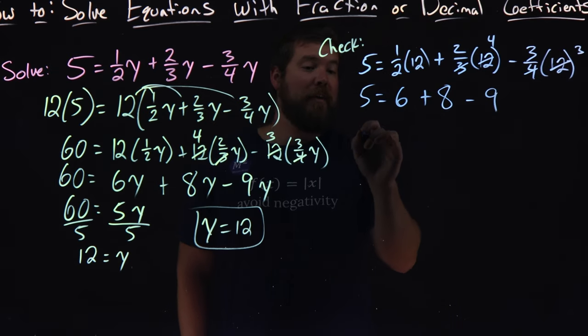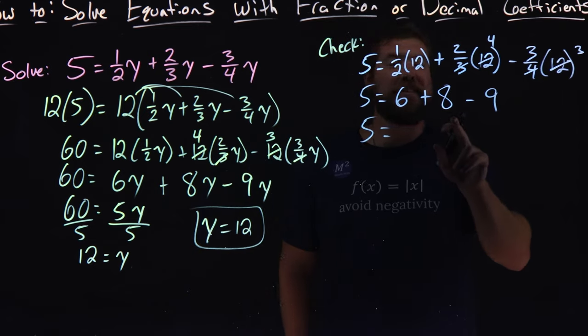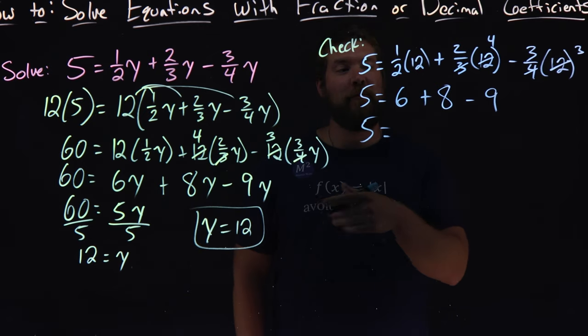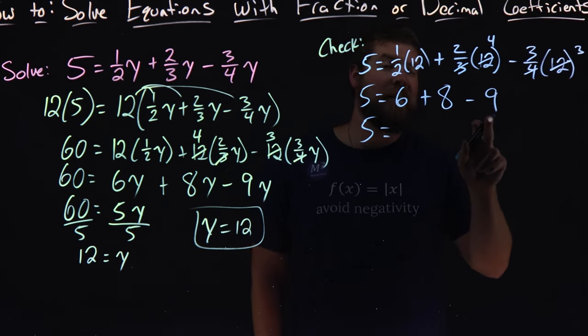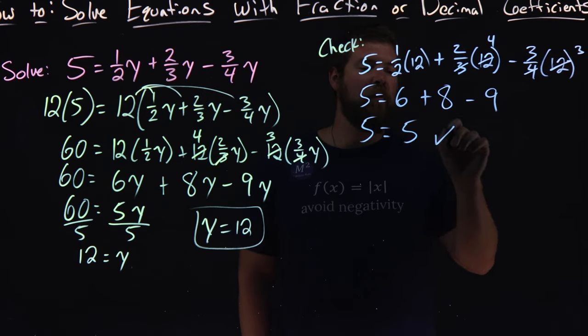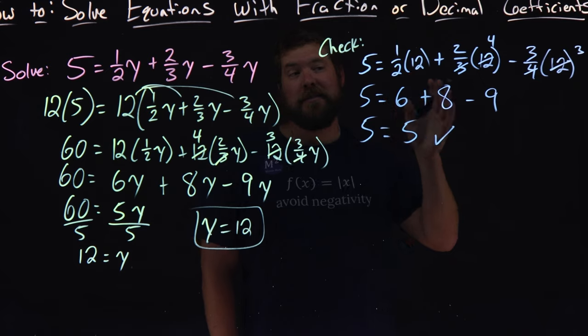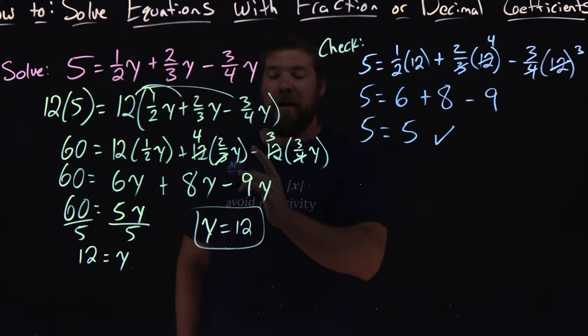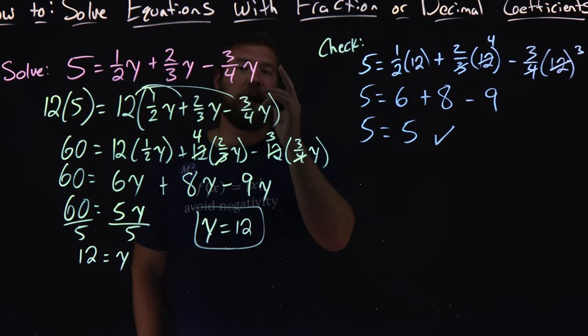Well, now we have 5 equals 6 plus 8 minus 9, looks very similar to before. 8 minus 9 is negative 1, plus 6 is 5. 5 equals 5, we're good. Left and right-hand side are equal, meaning our y equals 12 is a solution to our equation.